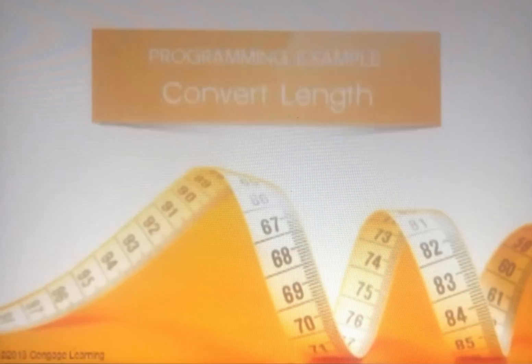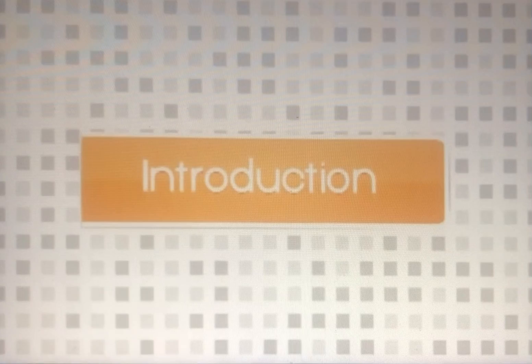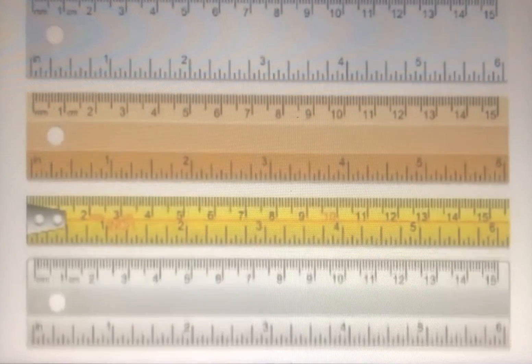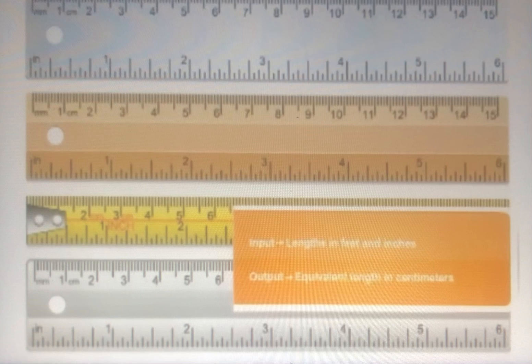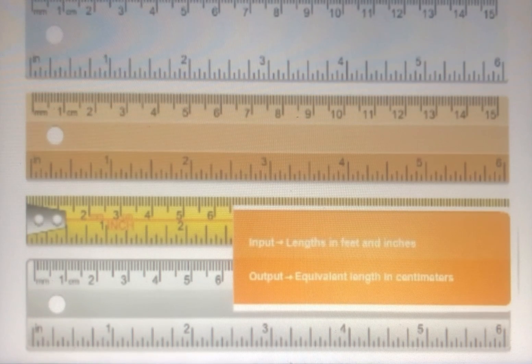This is a programming example for conversion of length. It explains how to write a program that takes as input given lengths expressed in feet and inches, and converts and outputs the lengths in centimeters.